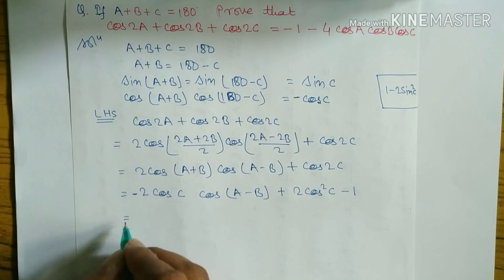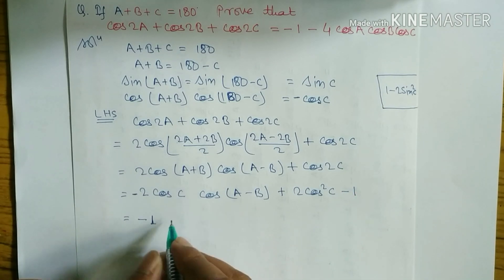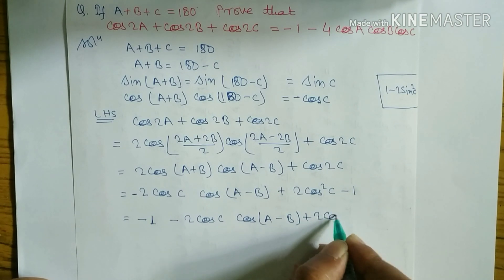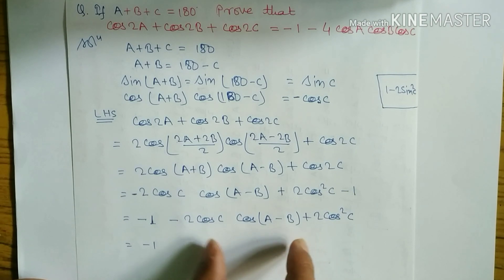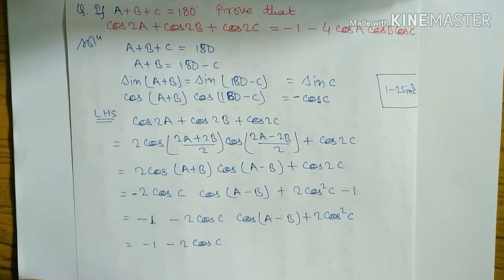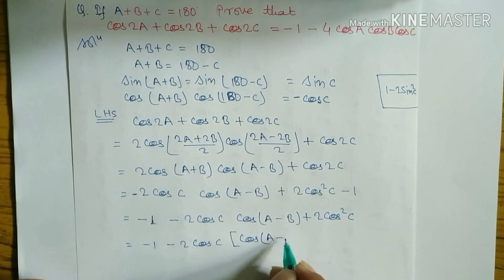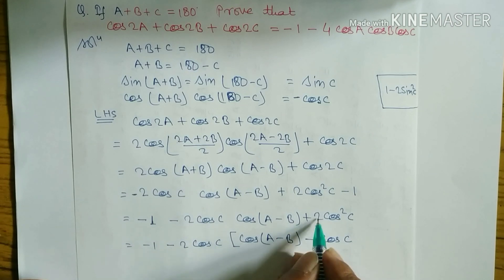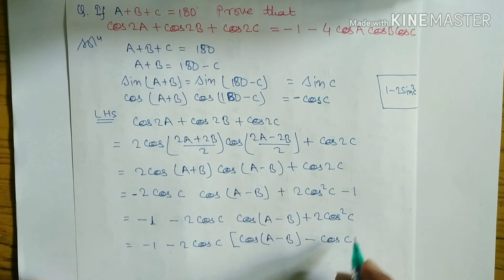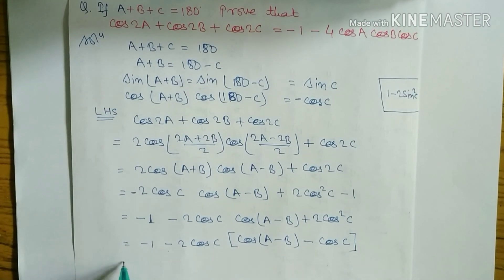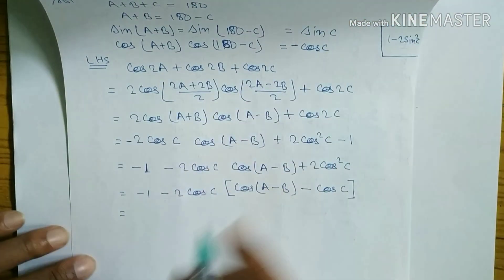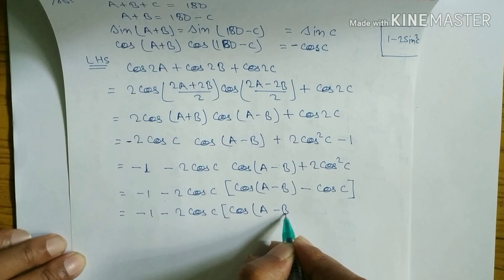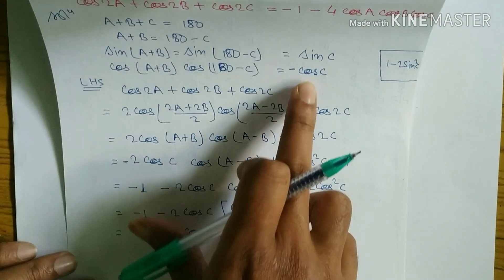So the expression becomes: minus 1 minus 2 cos C · cos(A-B) plus 2cos²C minus 1. Now from the last two terms take out minus 2 cos C as common: minus 2 cos C times [cos(A-B) minus cos C], since taking minus as common changes the sign. We get minus 1 minus 2 cos C [cos(A-B) minus cos C]. Now, cos(A+B) equals minus cos C, so minus cos C equals cos(A+B).